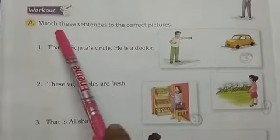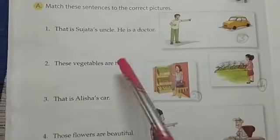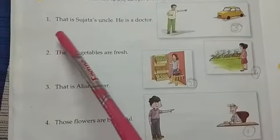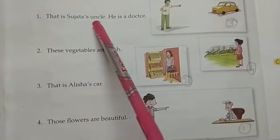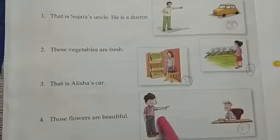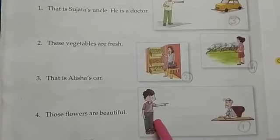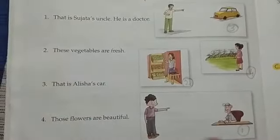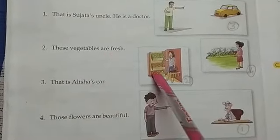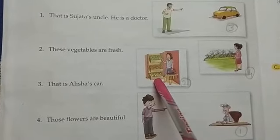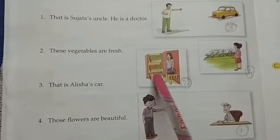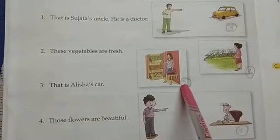Now we will come to the exercises. Match these sentences to the correct picture. Four sentences are given and four pictures are given — we have to match them. Sentence one: That is Sujata's uncle. He is a doctor. The person is talking from far away, so the word 'that' is used and number one will be matched to this picture. Sentence two: These vegetables are fresh. More than one vegetable is there and the lady is speaking nearby, so number two will be used here.